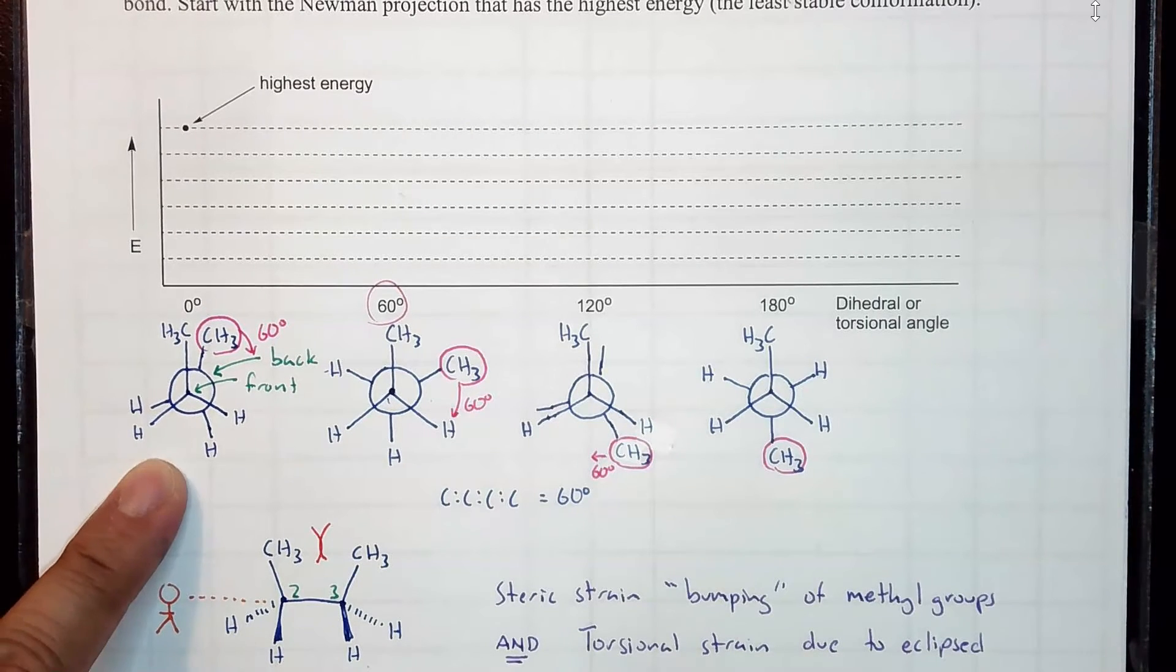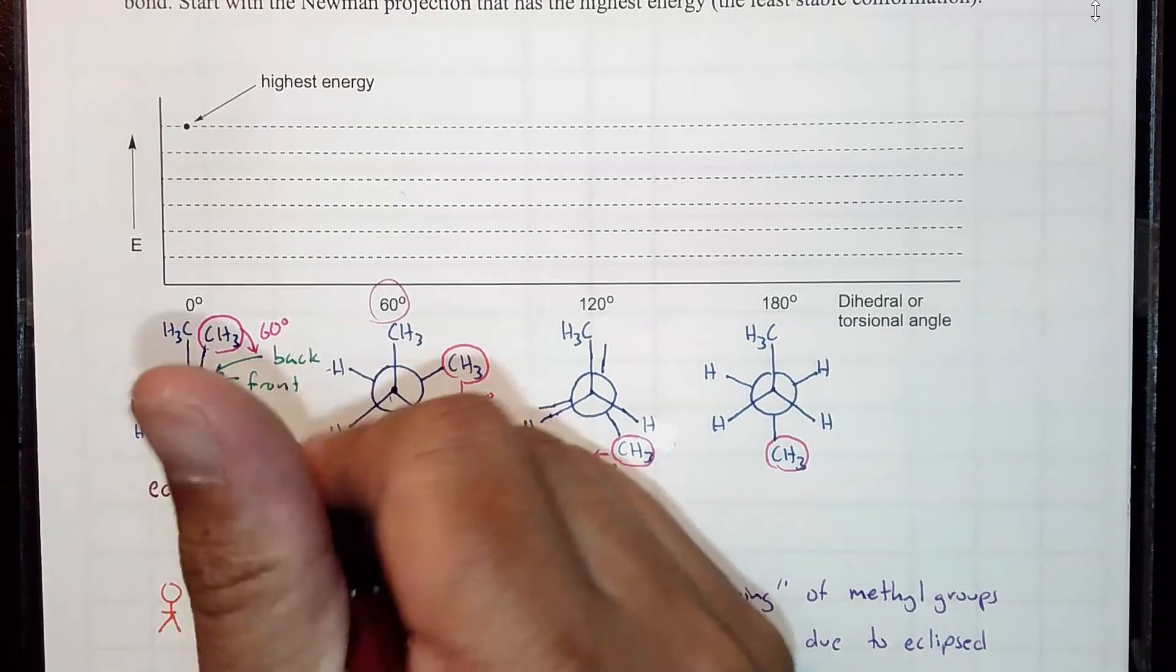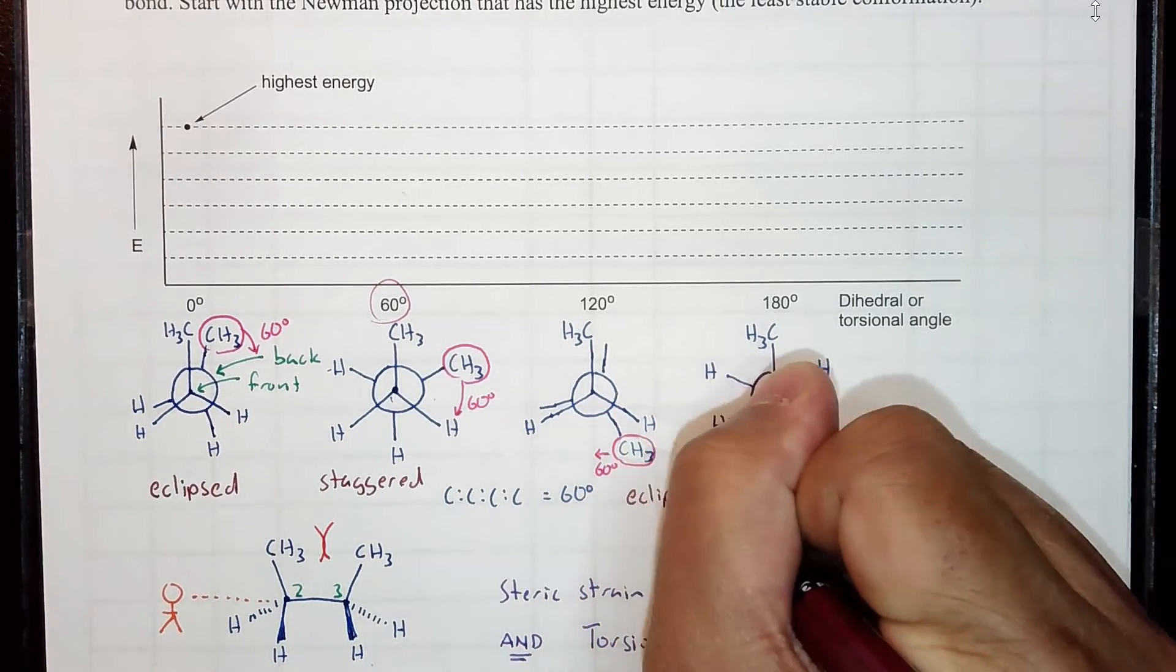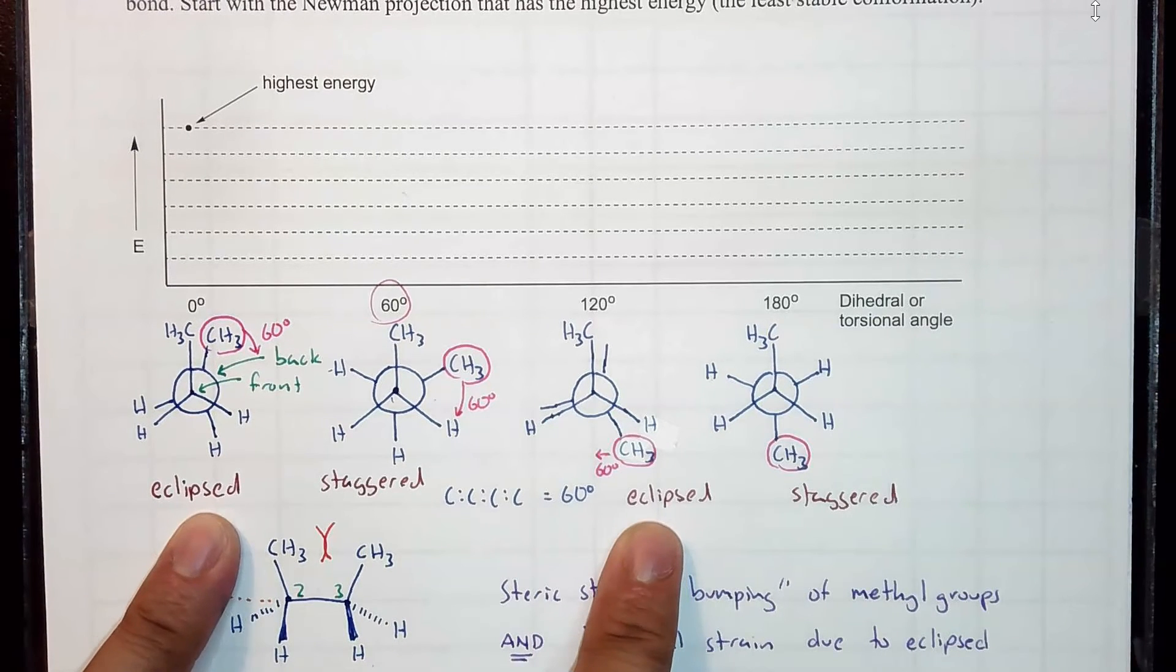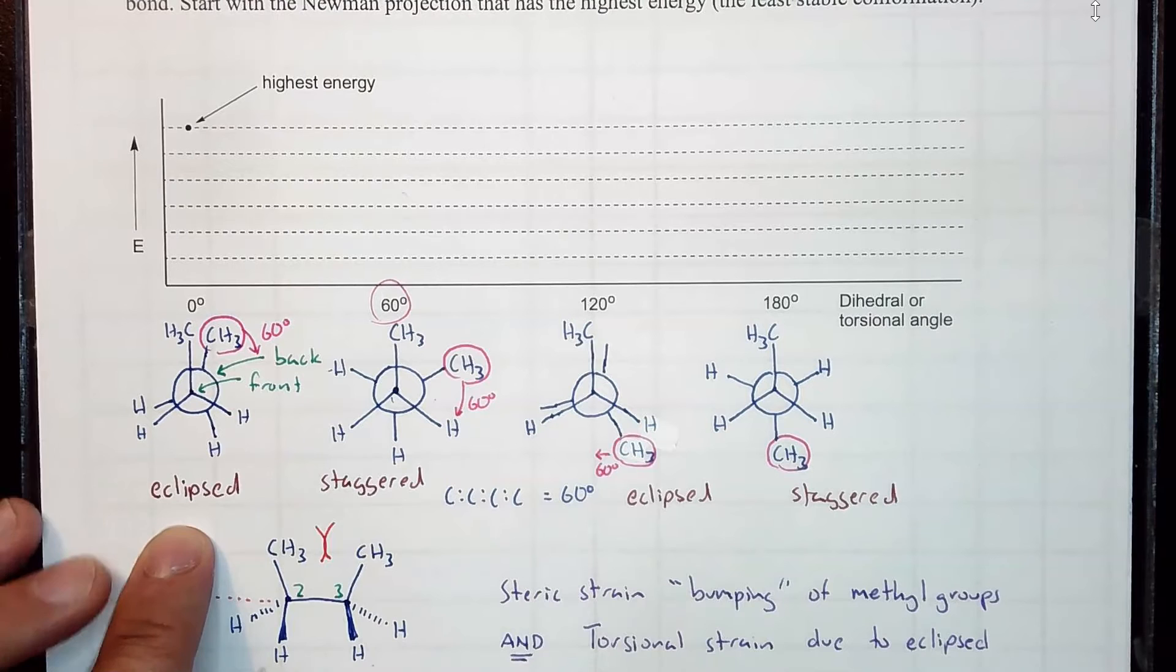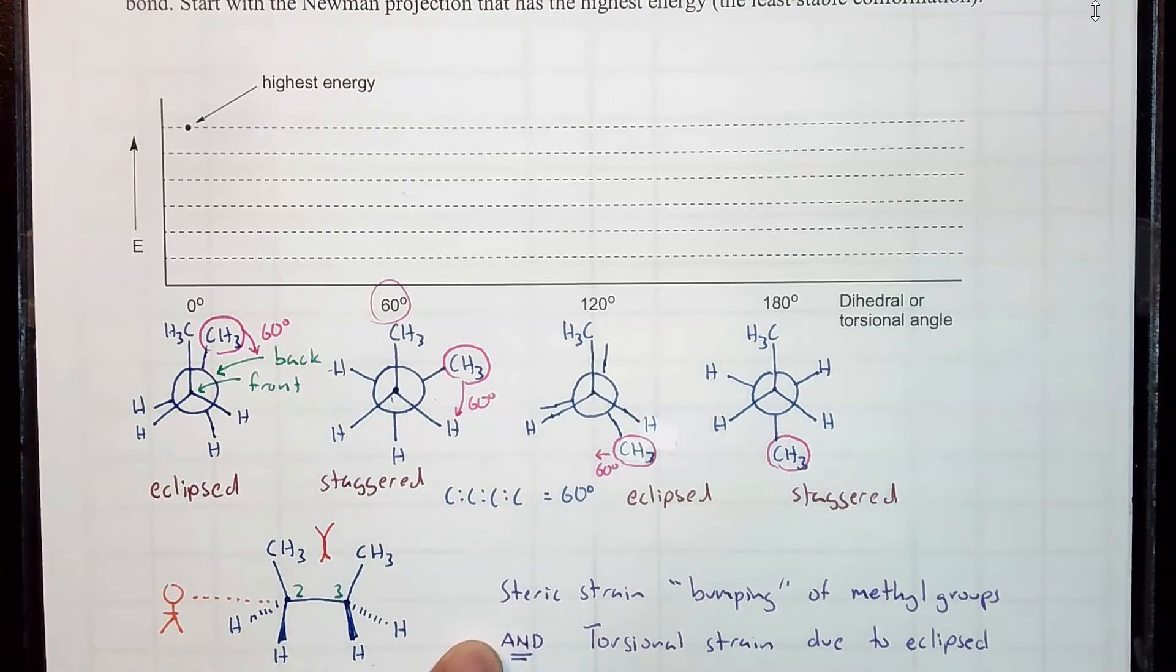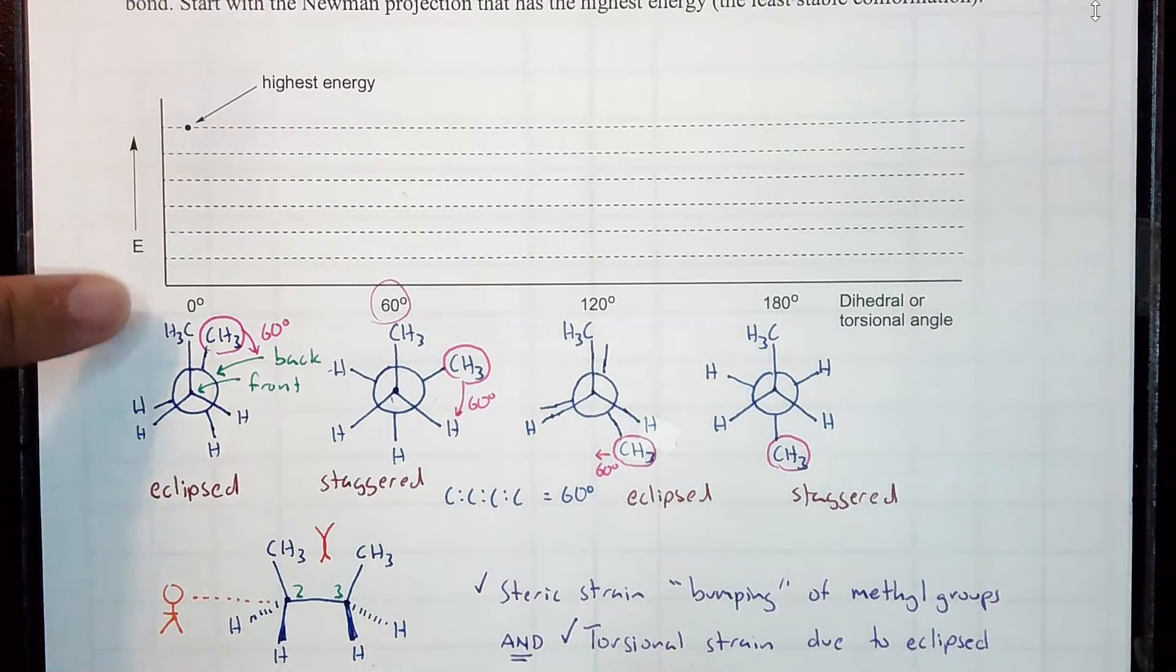Now we're going to give these conformations names. The first one is eclipsed. The next one is staggered for sure. The next one is eclipsed, and this one's staggered. But this molecule has a unique feature where the two eclipses are low and high in energy, but they're different in energy. One's higher than the other. This is the worst, the highest energy. This is the second highest energy. Do you know why?